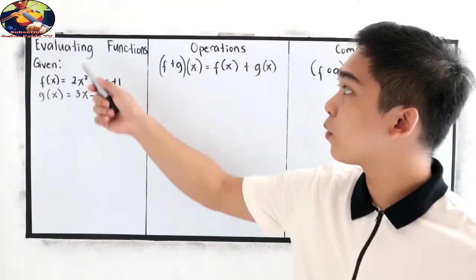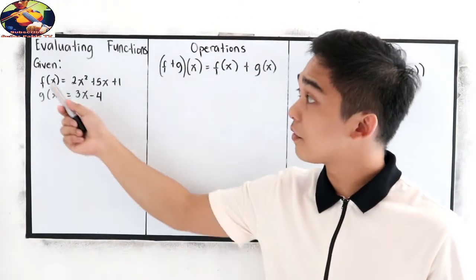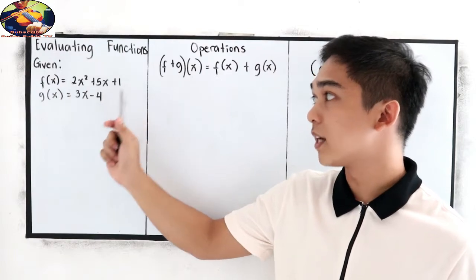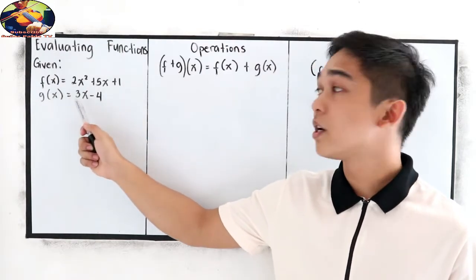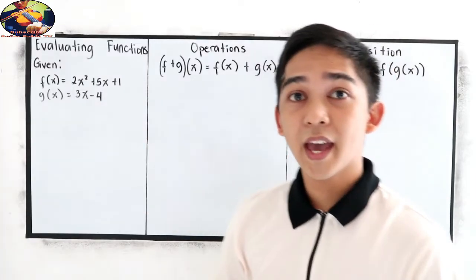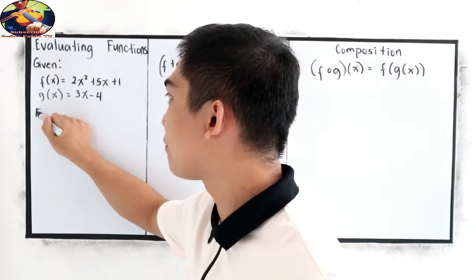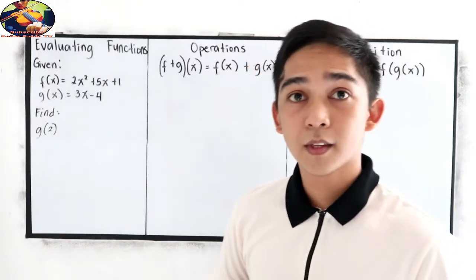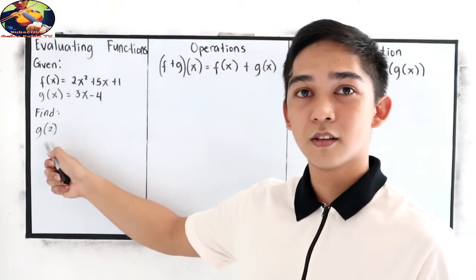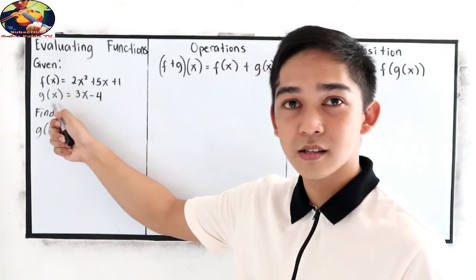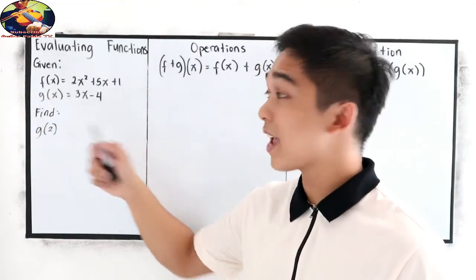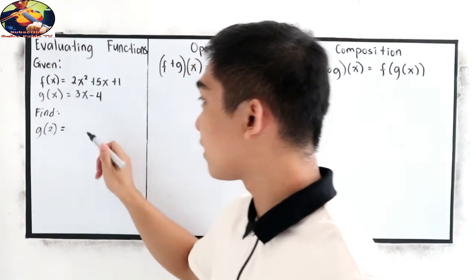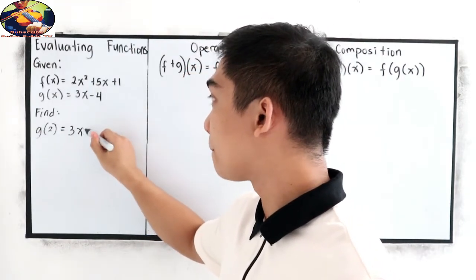In evaluating functions, if we have f(x) = 2x² + 5x + 1 and g(x) = 3x − 4, and your task is to find g(2). Since we have g(x), we're going to use the expression for g(x), which is 3x − 4.